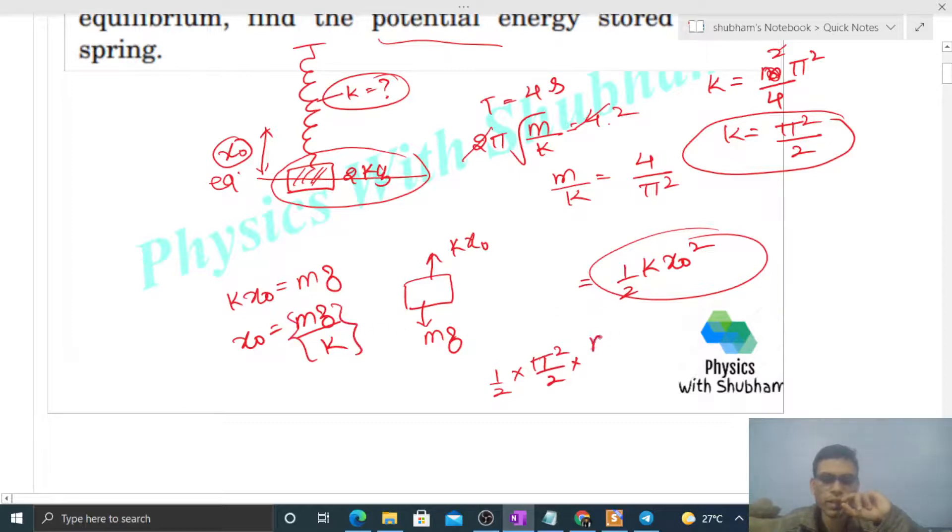So half of k, k value is π² by 2, right, into x₀². x₀² is m²g² divided by k². k² will be π⁴ divided by 4, right?